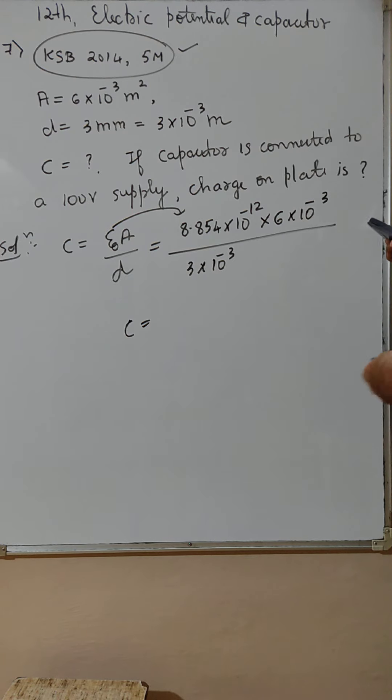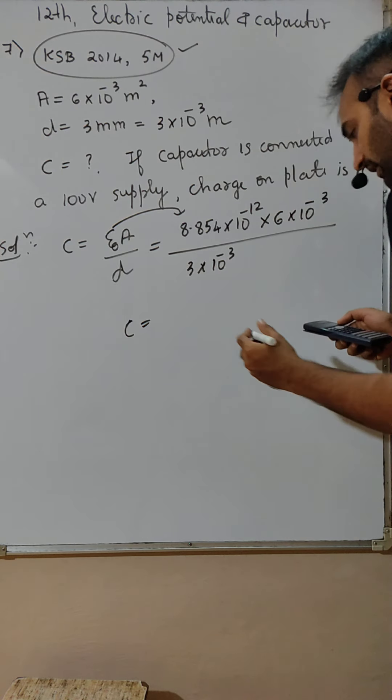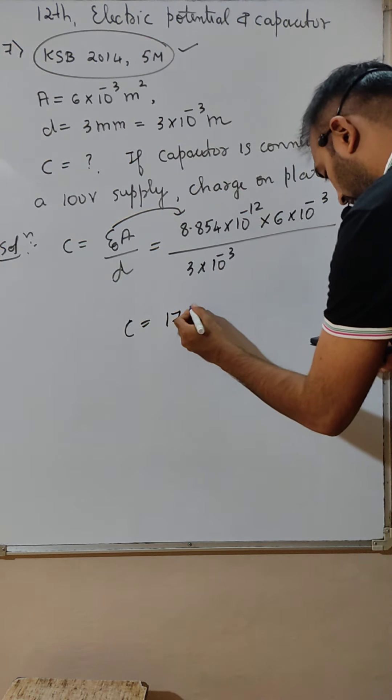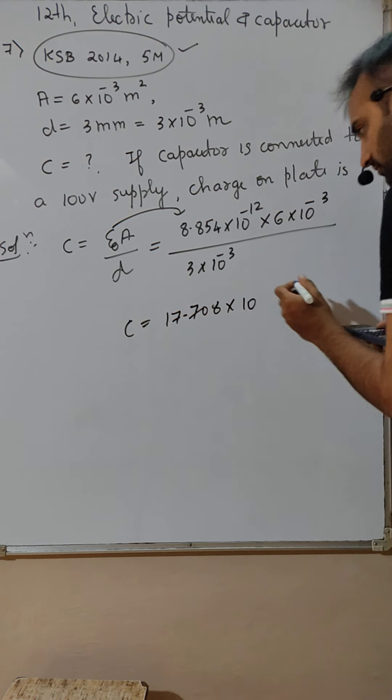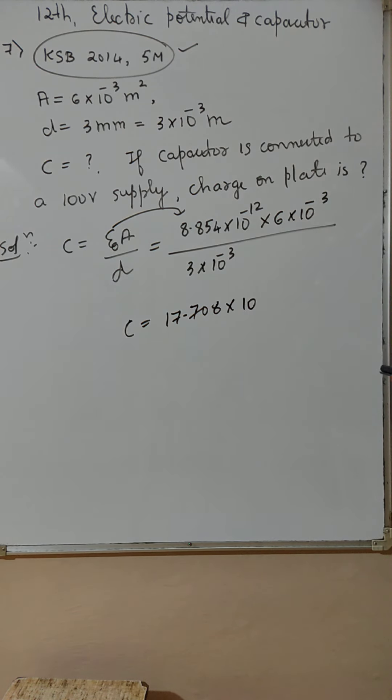This is oral, this is cut out. I am getting 17.708 into 10 raised to minus 12. This is good, this cut out, 10 raised to minus 12.